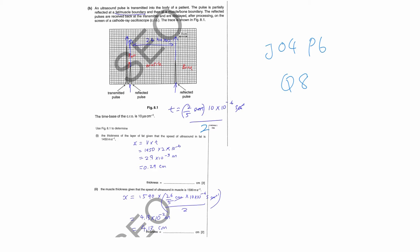Why must you divide by 2? Because the ultrasound goes into the fat layer and then comes back out again — that's your first reflected pulse. In other words, the time difference between this peak and this peak is the time for the ultrasound to go into the fat and come out again. So when you find the time from here to here, it is time for it to go and come back. Therefore, after you found the time, you must divide by 2 because you want only one side — the time to pass through the fat.